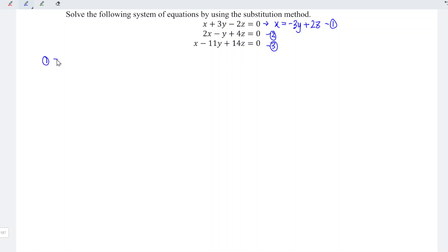Now, let's substitute equation 1 into equation 2. So we have 2x, where x is equal to minus 3y plus 2z, and we have minus y plus 4z equal to zero. Let's expand.